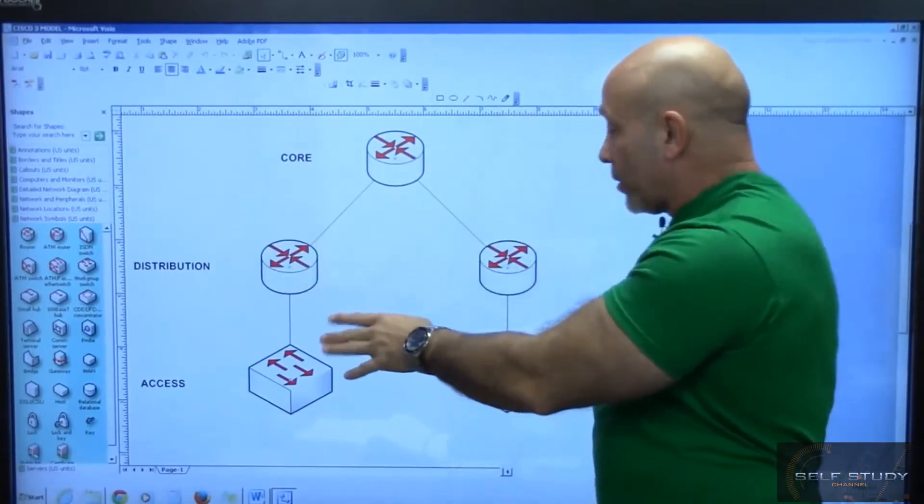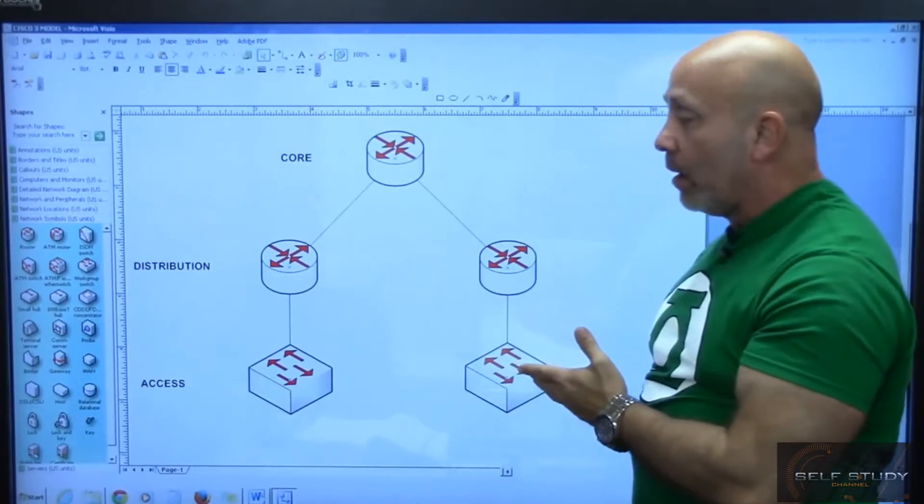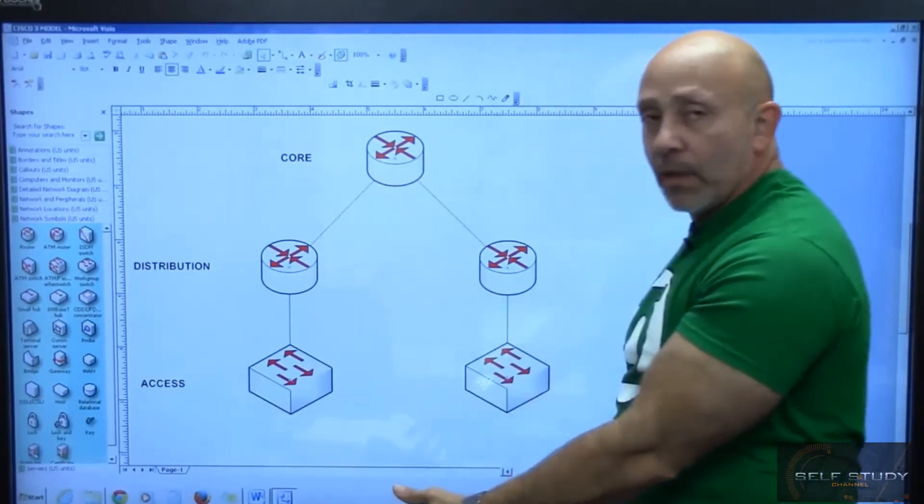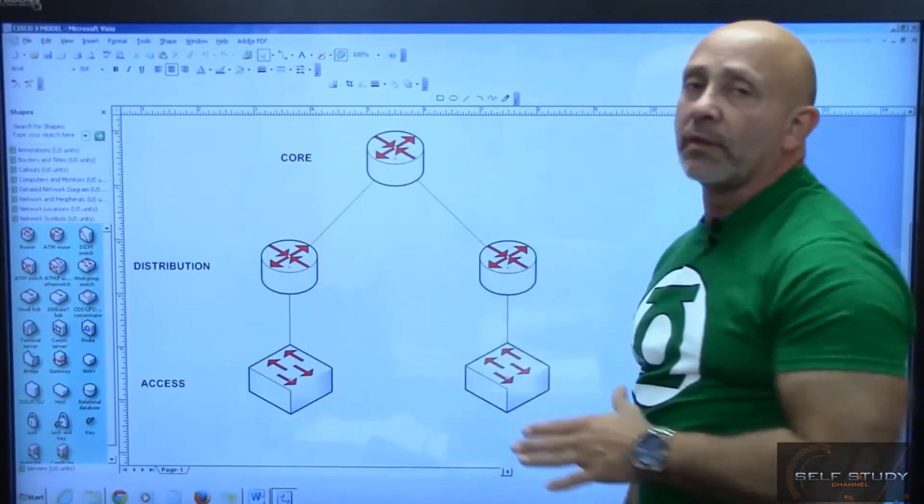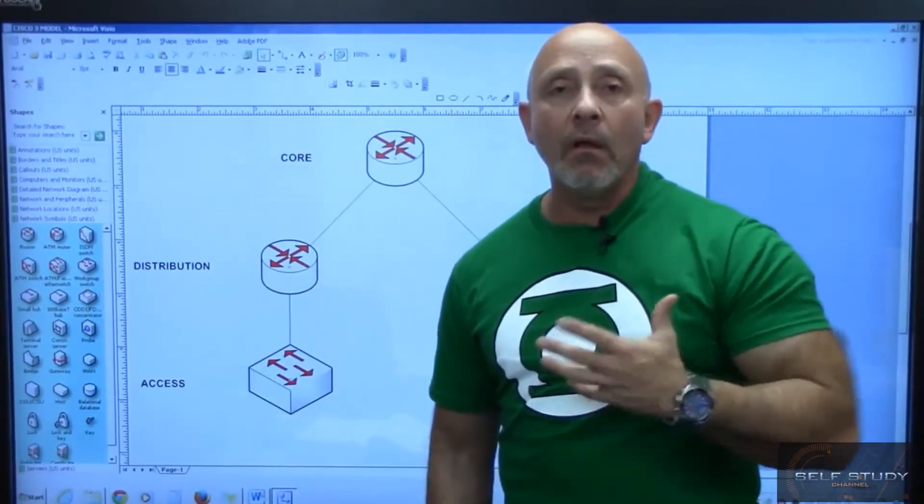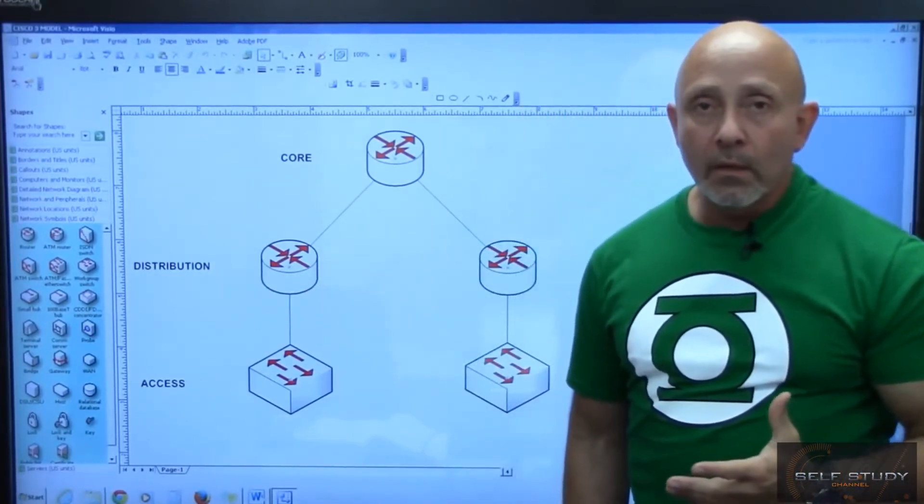Or is it going somewhere else, to this router if I had a connection going here, or is it going to another VLAN because there's other VLANs coming down? This distribution layer really is doing all that work.